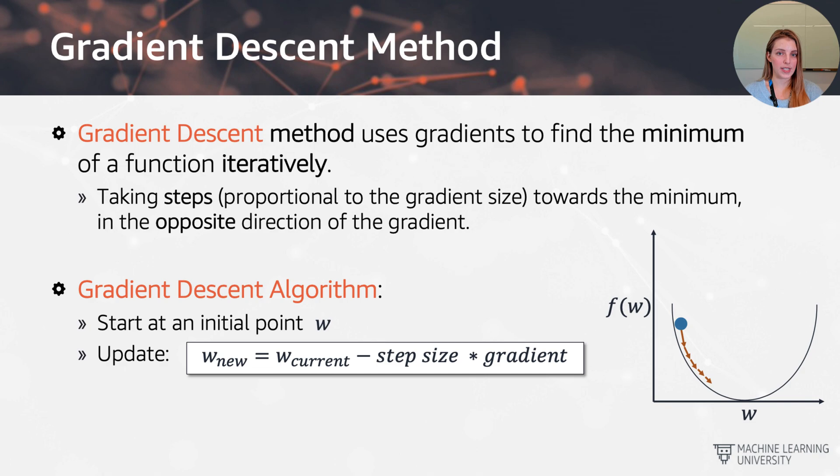So here we have a few more details about gradient descent. How does the gradient descent method work in a nutshell? So we just said it's a method that helps us find w values. And how does it do that? Well, it uses the gradients. So a little bit of a throwback here to linear algebra. So gradient descent is going to be a method that uses gradients to find the minimum of a function iteratively. And we take steps. And this will be proportional to the gradient size towards the minimum of the function, which is going to be the opposite direction of the gradient itself. So gradient will point in the direction of the steepest increase. So we want to move in the opposite direction.